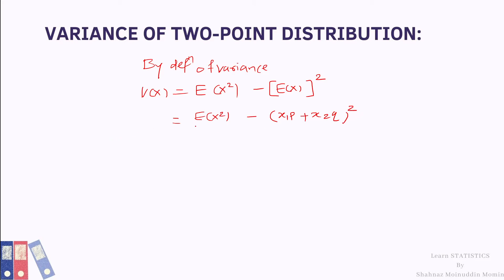Now we have to calculate E[X²]. By definition, E[X²] equals summation for i equal to 1 to N of Xi² times Pi.